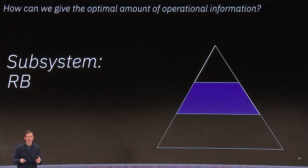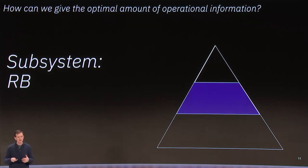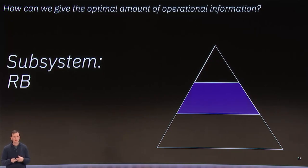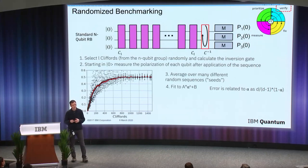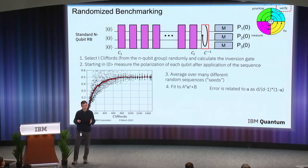So as an overview, how do we get operational information about our device through subsystem benchmarking? Our goal is to get optimal information that has some predictive power, but that we can obtain rather quickly so we can continually update it. IBM, much like a number of other groups, has really leaned on the randomized benchmarking protocol because it's relatively quick and it's not sensitive to measurement and preparation errors.